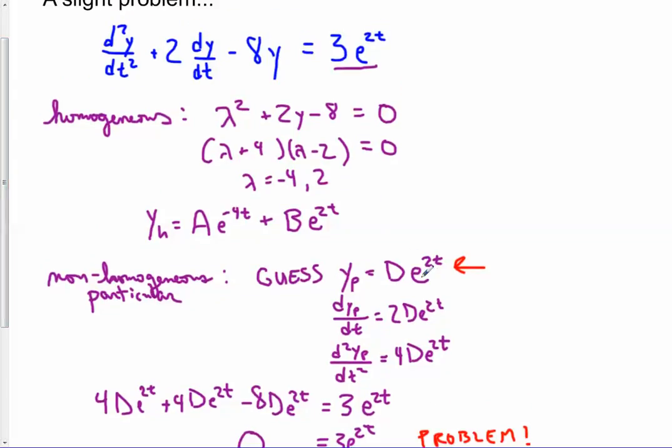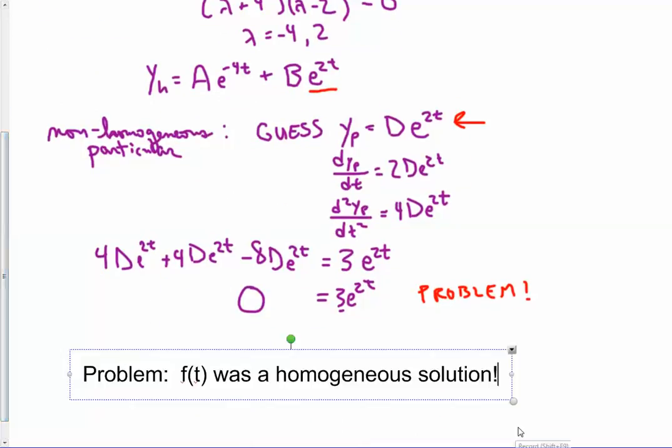And the reason is e to the 2t, which we based on that, was already part of our homogeneous solution. It was already part of our homogeneous solution. And we know that e to the 2t will make the left-hand side equal 0, because that's what it means to be a solution to the homogeneous equation, the corresponding homogeneous equation. So this was the issue. The f of t was a homogeneous solution. And so a guess of the same form will just always fail. So how do we get around this? There is a workaround.